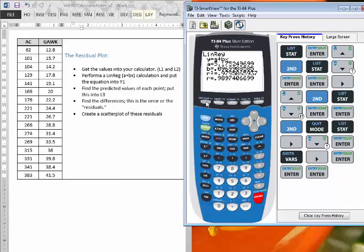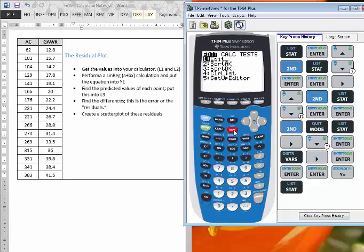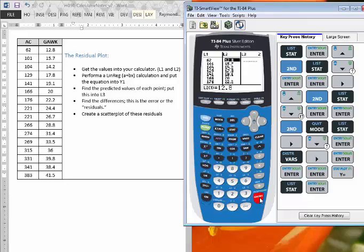So now that I have that, I know that my Y1 has the regression line, and I will just go ahead and check that. I'll press Y equals, and here's my regression line. Now I'm ready to go back to my list and fill in L3 and L4. So I press stat and edit, and now I want to move this into L3. I'm going to right arrow and go up to L3.